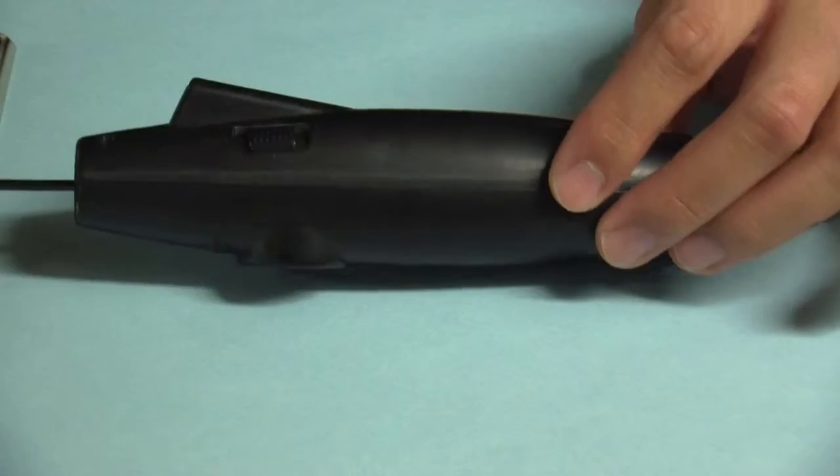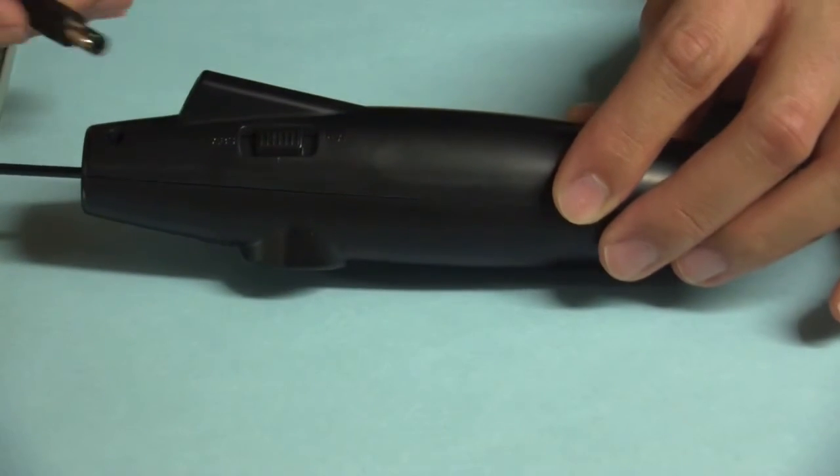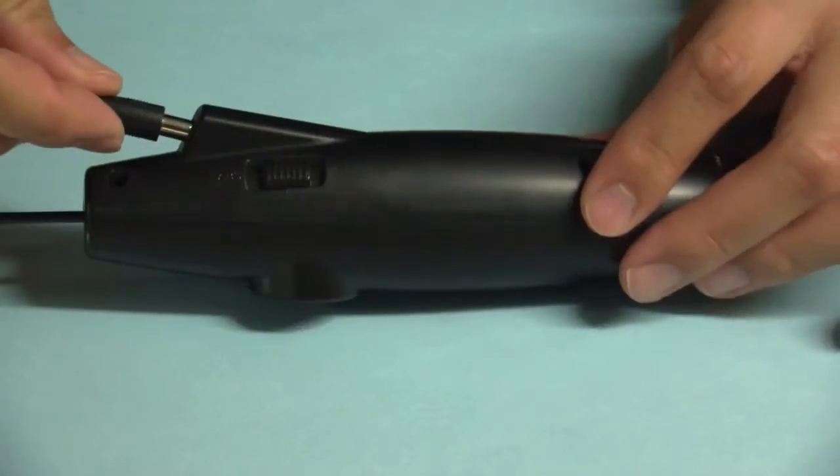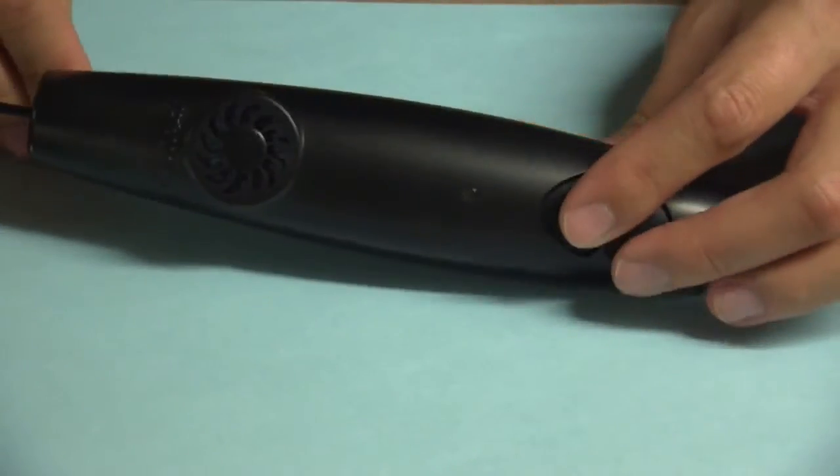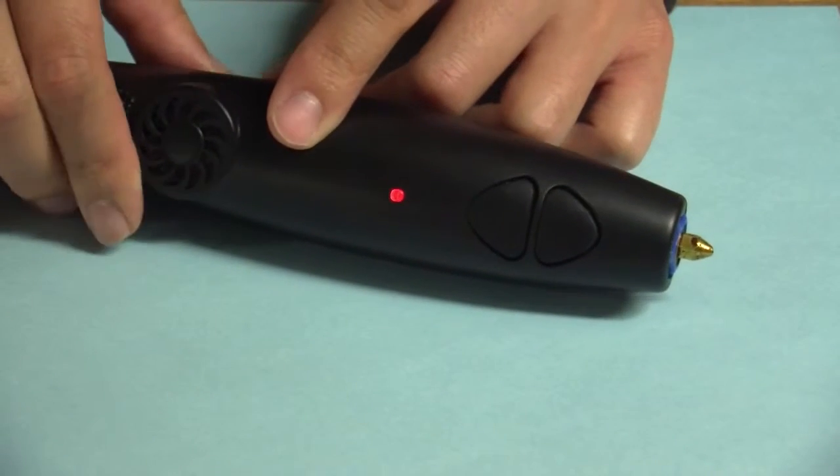And you have two control switches, one for fast extrusion and one for slow extrusion. And as you can see, the device has a built-in fan that also helps cool the plastic as you're pushing it out of the pen.